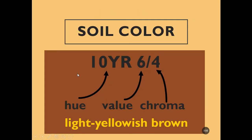Here's an example. If someone records a soil color of 10YR 6/4 — the hue is 10YR, value 6, chroma 4 — it ends up being this yellowish-brown color right down here. It's 10YR 6/4. So that's the proper way to note and say that.